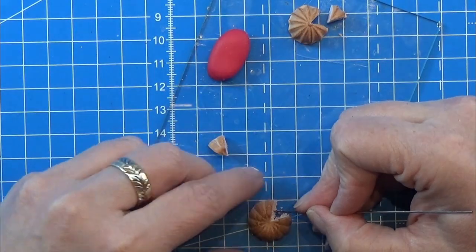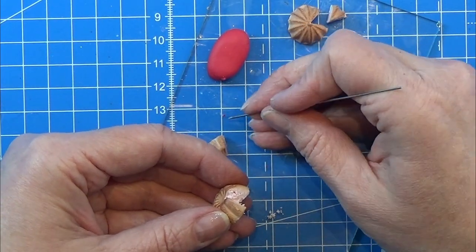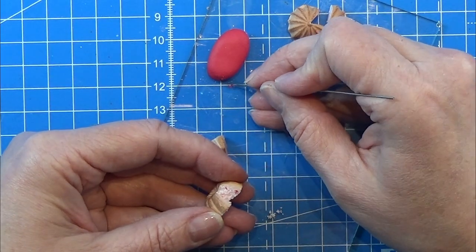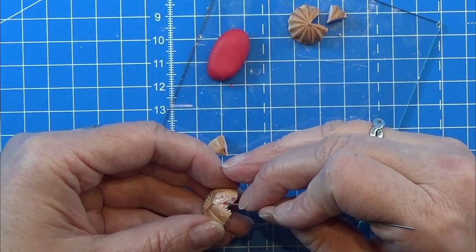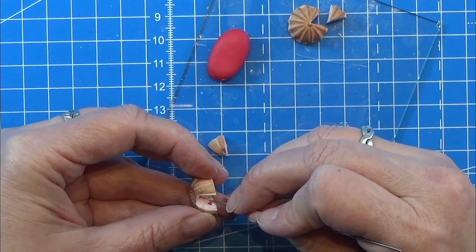Then I am taking some red clay here and I am just scratching tiny small pieces of it and I am placing these tiny small pieces here and there in the cake and on the cake slice to look like some strawberry fillings or something like that.